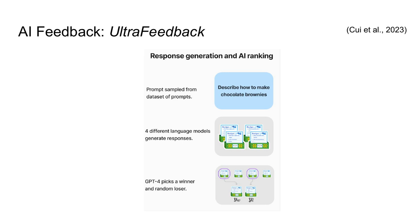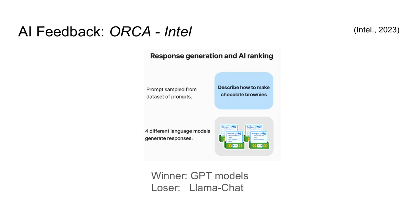The most compelling idea is to instead use AI feedback. Just like with self-instruct, the main idea is to run a generic large language model and use its outputs in place of human data collection. We'll follow a dataset known as UltraFeedback. The way this dataset works is you collect a large amount of prompts, such as 'describe how to make chocolate brownies.' From this prompt, you collect four different responses from four different large language models, then utilize GPT-4 to tell us which response was the best — the winner — and the others are the losers. Another method is to simply decide that GPT-4's output is always the winner and LlamaChat's output is always the loser. This sounds a bit silly, but it seems to work well in practice.